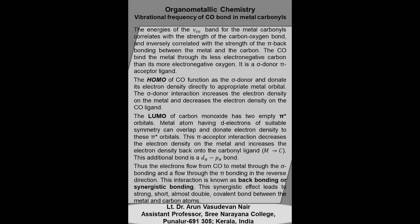The CO carbonyl ligand is a sigma donor pi acceptor ligand. The highest occupied molecular orbital of carbon monoxide functions as the sigma donor and donates its electron density directly to the appropriate metal orbital. The sigma donor interaction increases electron density on the metal and decreases electron density on the CO ligand. The lowest unoccupied molecular orbital of carbon monoxide has two empty pi star orbitals. Metal atoms having electrons of suitable symmetry can overlap and donate electron density to these pi star orbitals. This pi acceptor interaction decreases electron density on the metal and increases it back onto the carbonyl ligand. This additional bond is called a d-pi p-pi bond.